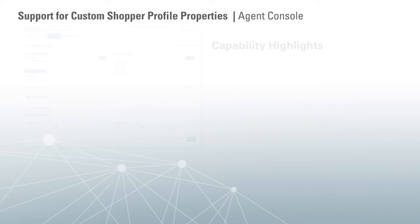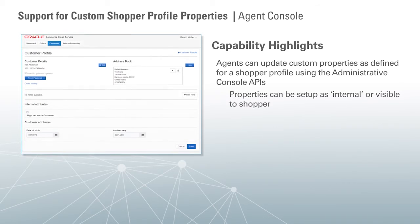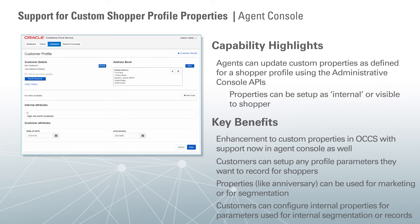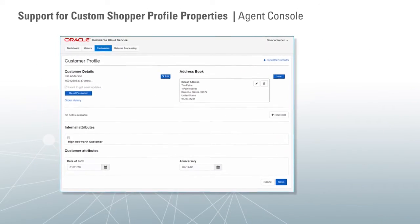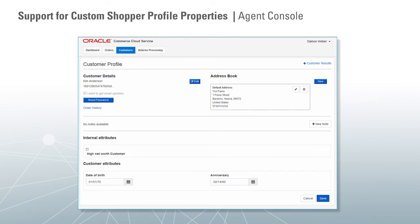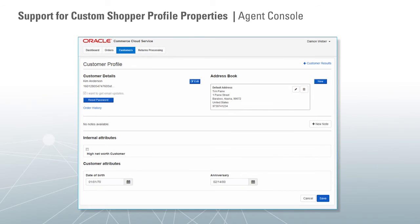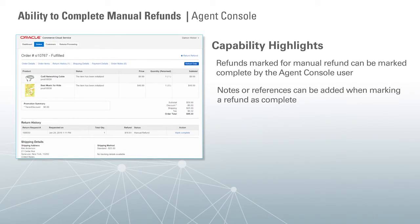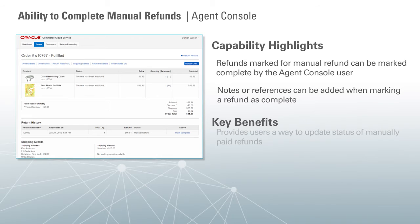In this release, agents can update custom properties as defined for a shopper profile using the administrative console APIs. These properties can be set up as internal or visible to a shopper. Agent console also supports custom order properties — agents can set up any order parameters they want to record, such as shipping instructions. Finally, for agent console, refunds marked for manual refund can be marked complete by the agent, and notes or references can be added when marking a refund as complete. This feature provides agents a way to update the status of manually paid refunds.